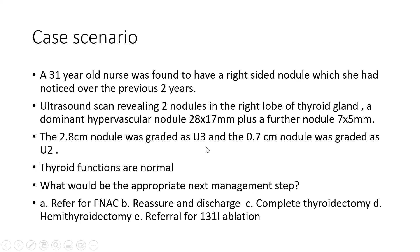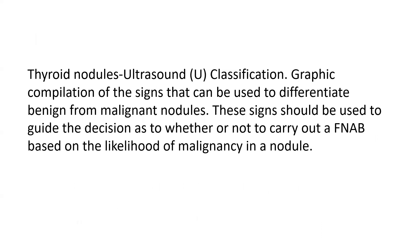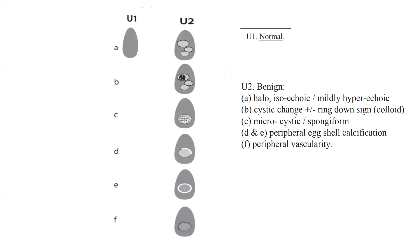Let's look at the correct answer based on the guidelines. Most importantly, we should know the U classification — a graphic compilation of signs used to differentiate benign from malignant nodules. These signs guide the decision as to whether or not to carry out an FNAC, based on the likelihood of malignancy. U1 is normal. U2 is benign — it can be hallow, isoechoic or mildly hyperechoic; it can show cystic changes with or without ring-down sign, which is colloid; or microcystic spongiform.